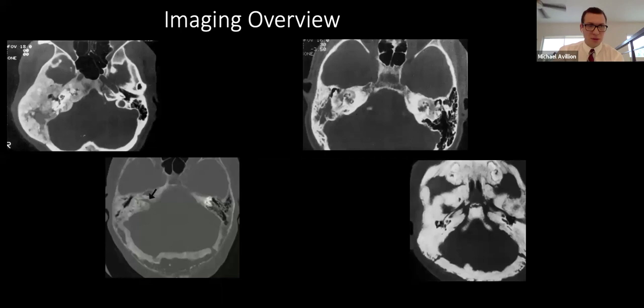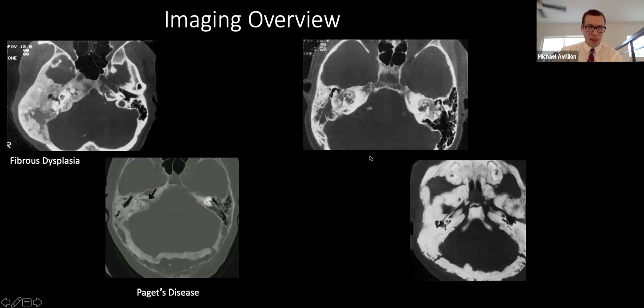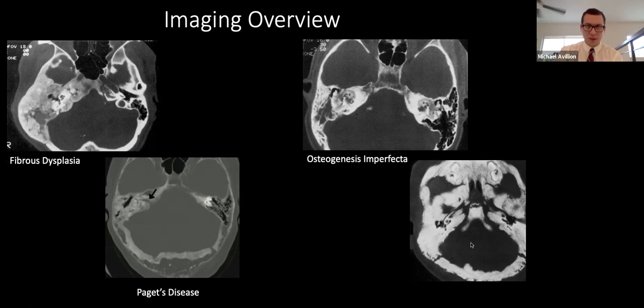For an imaging overview: the top left image shows unilateral ground glass bone involvement with sparing of the otic capsule — that's fibrous dysplasia. The bottom middle shows thickened calvarium, widened diploic space, and sclerosis, more asymmetric with otic capsule involvement — that's Paget's disease. The top right shows diffuse bilateral resorption of bone around the otic capsule, more than would be seen in otosclerosis — that's osteogenesis imperfecta. The bottom right shows diffuse, dense, chalky bone with narrowing of foramina — that's osteopetrosis.